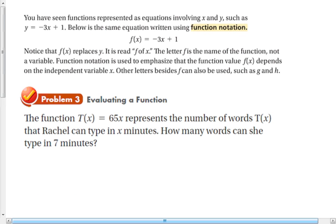As you've seen, functions can be represented as equations of all names and y, such as y equals negative 3x plus 1. Below is the same equation written using function notation. Notice that f of x replaces y. It's read f of x. The letter f is the name of the function, not a variable. The function notation is used to emphasize that the function value of f of x depends on the independent variable x. So we use the parentheses to highlight the input or independent variable. And you can use any letter you want.